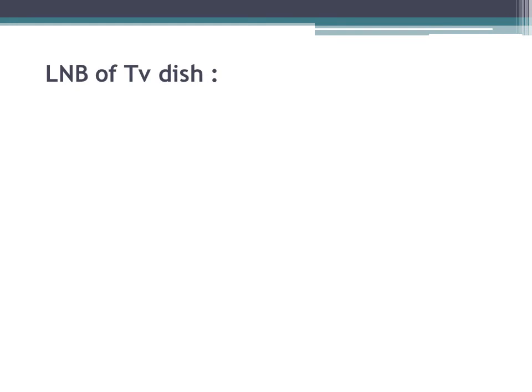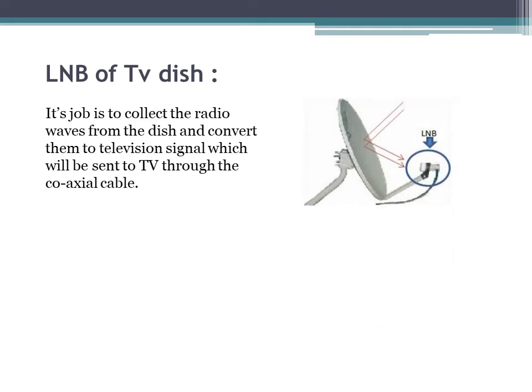The main component of the TV dish is the LNB, which stands for Low Noise Block. Once the electromagnetic waves are received by the parabolic dish, it reflects the signal towards the LNB. The LNB converts the given radio frequency signals into television signals and connects them to the coaxial cable. The coaxial cable is used as a medium which carries television signals from the dish to the TV.